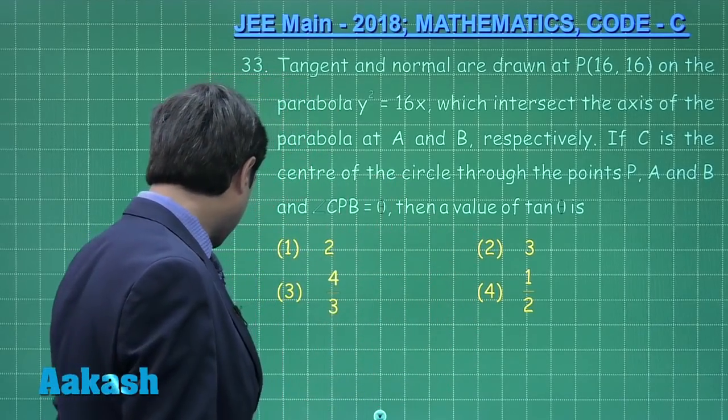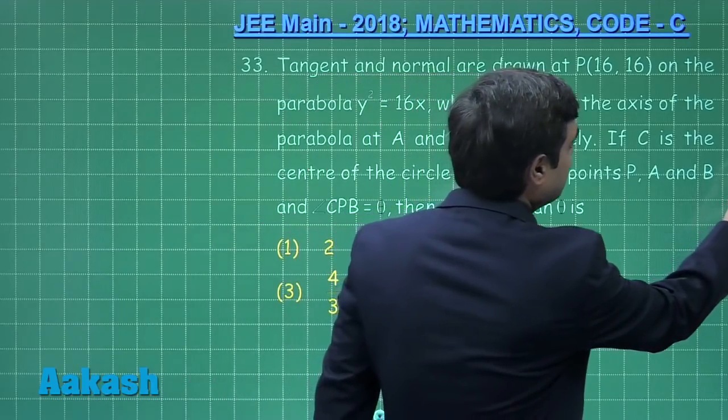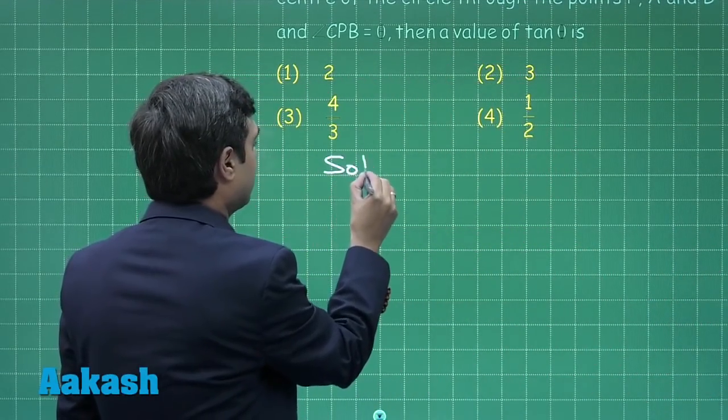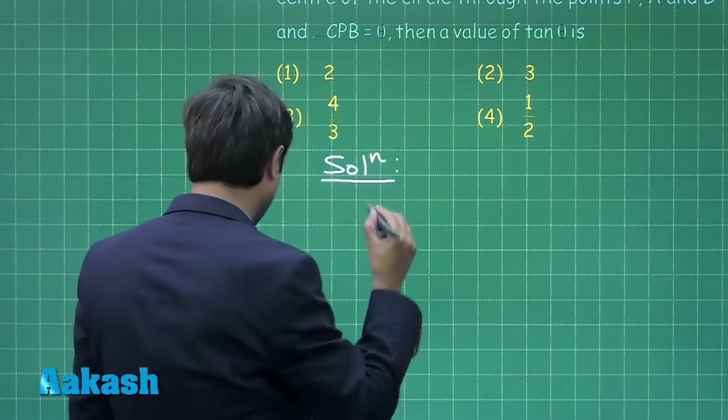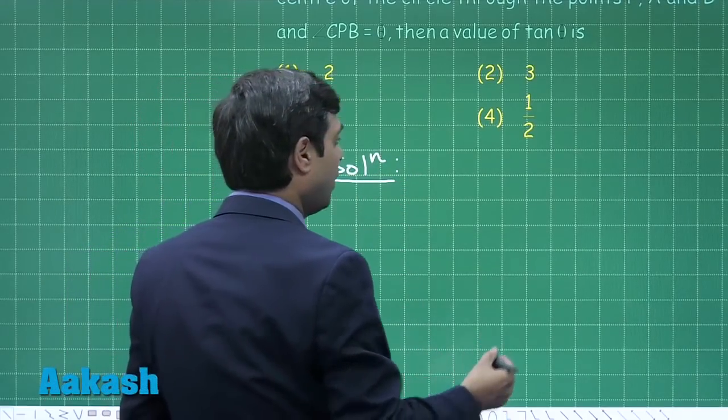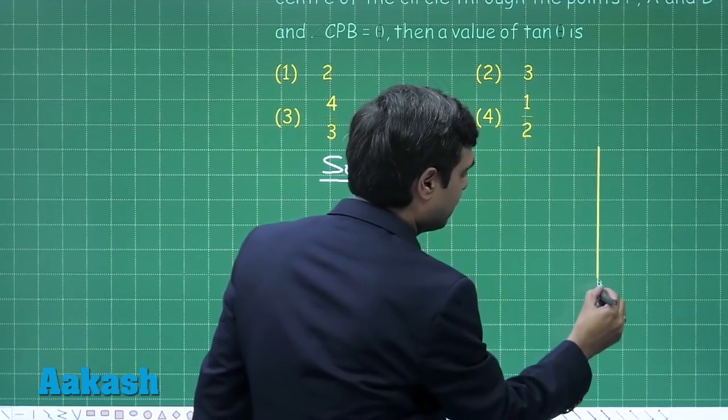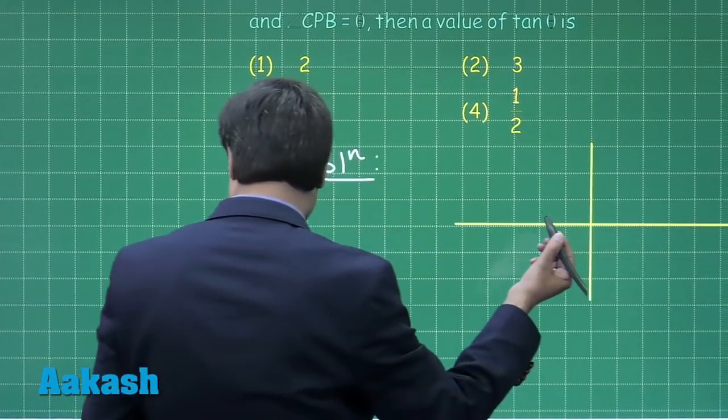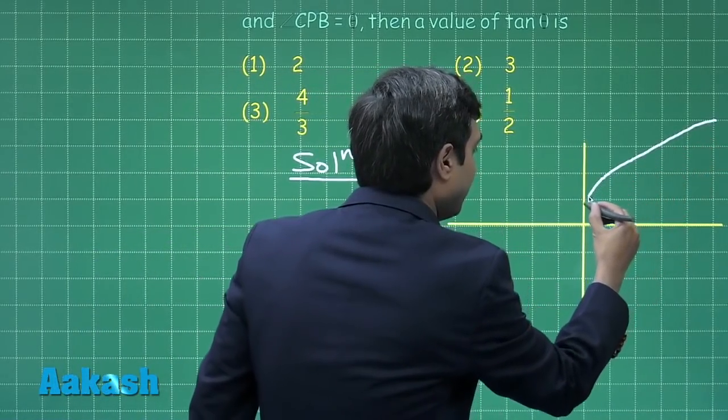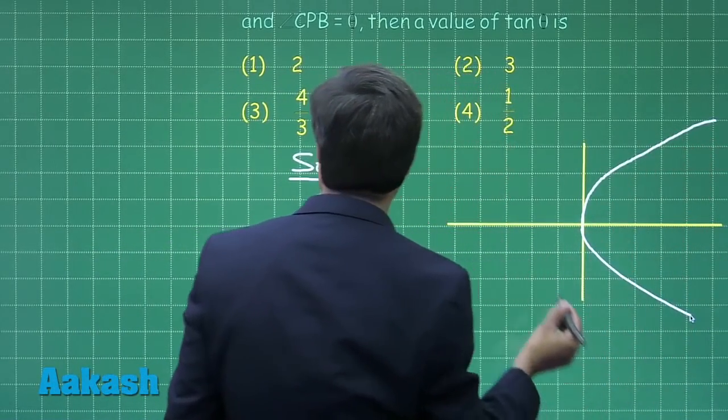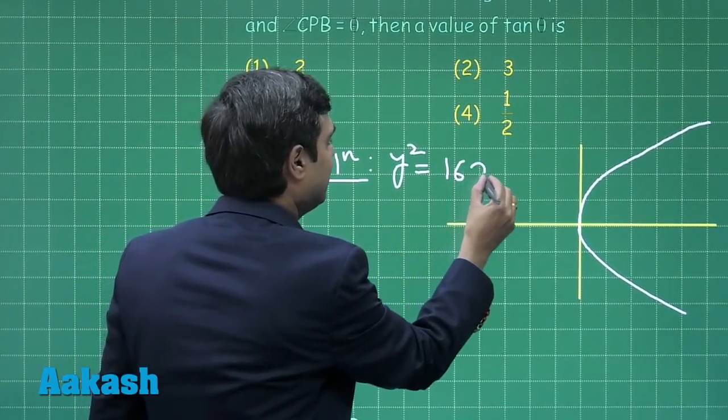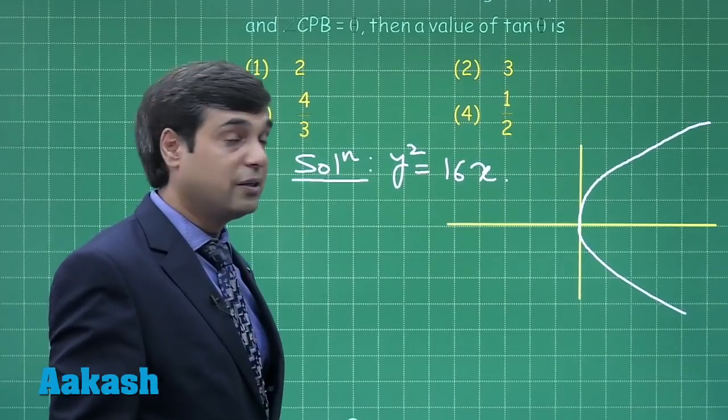The question from coordinate geometry. We can start this question by drawing the parabola first. The given parabola is y² = 16x. Let us write it y² = 16x.